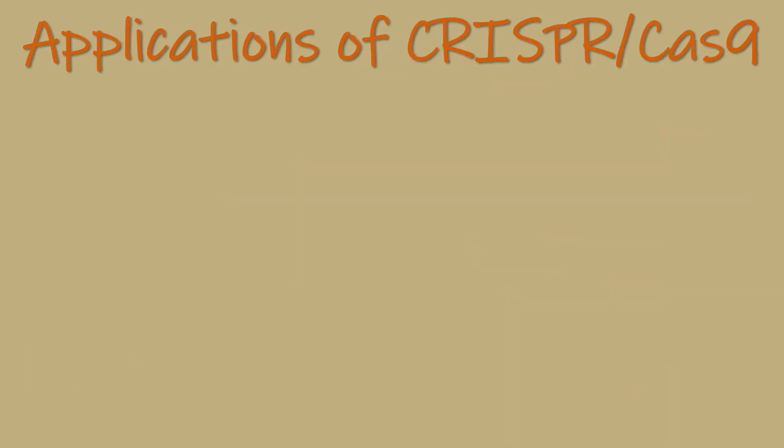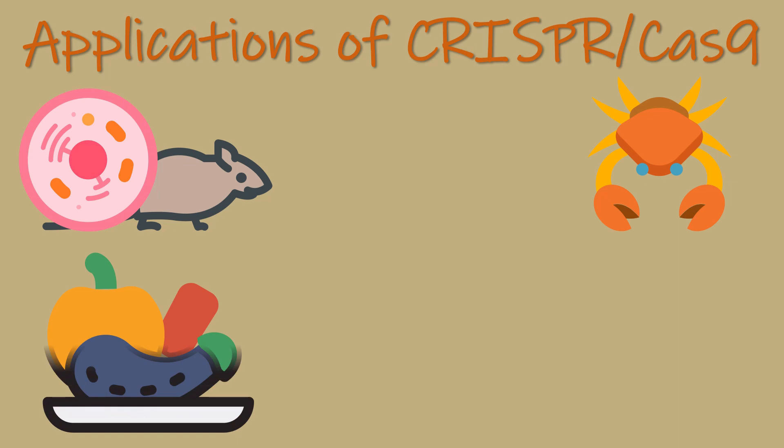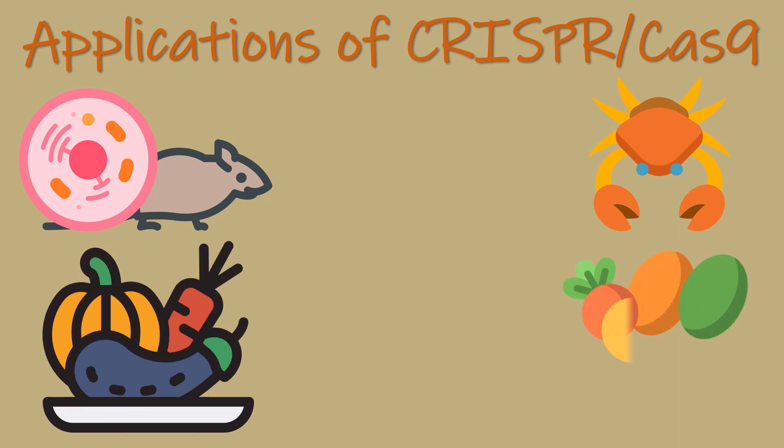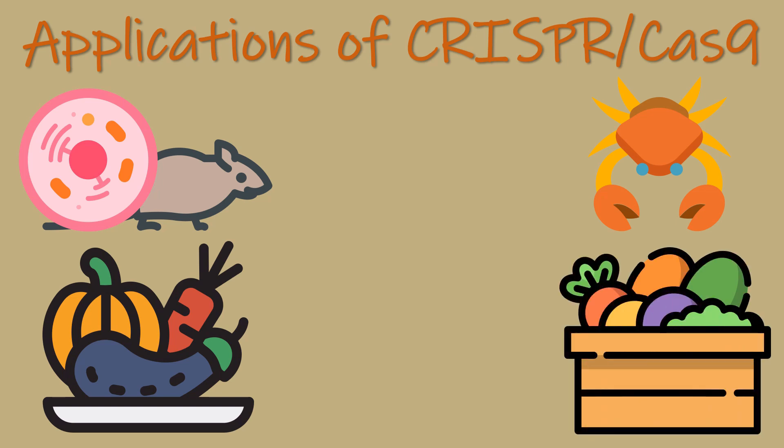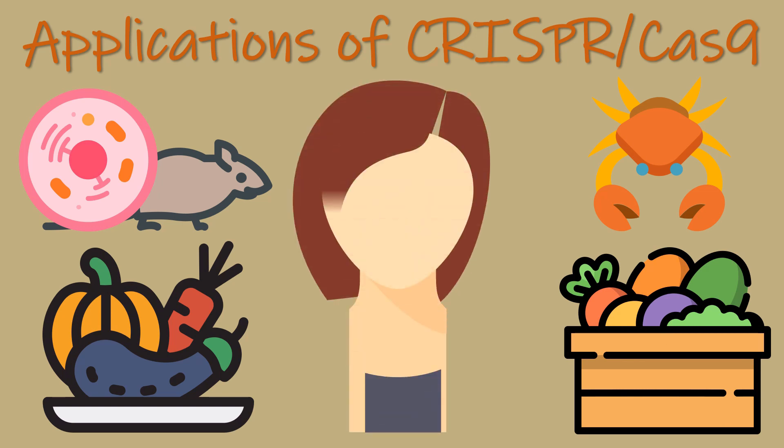CRISPR genome editing tool allows scientists to quickly create cell and animal models which researchers can use to accelerate research in diseases such as cancer and mental illness. Researchers can even use the technique to edit plants to either increase the yield or make them resistant to pesticides, increase shelf life, or add nutritive ingredients. In addition, the CRISPR technology is now being developed as a rapid diagnostic tool. CRISPR technology has been applied for treating some genetic disorders as well.